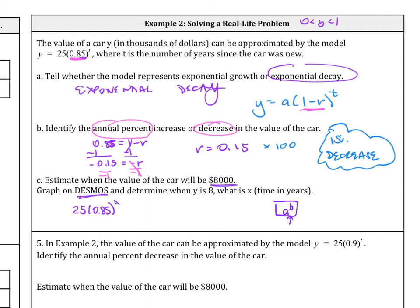And then you're going to get your growth, and then you can kind of zoom out. The next part you want to do is to determine when the value of the car will be $8,000. So this value here, we want this to be $8,000. So the quickest way to find it is that you type in, in the next line, y equals 8.